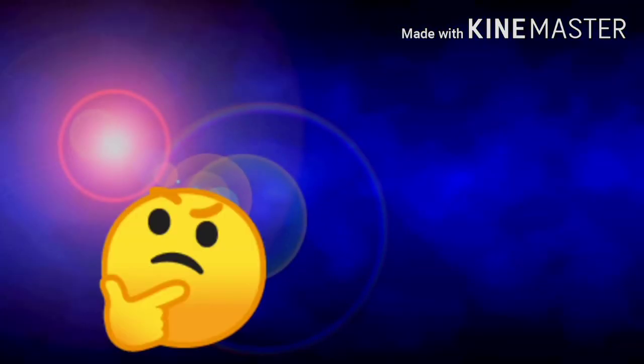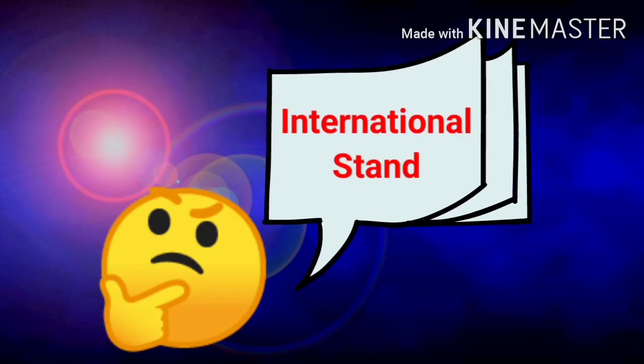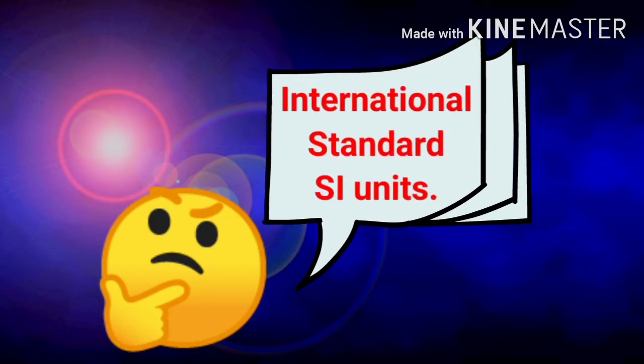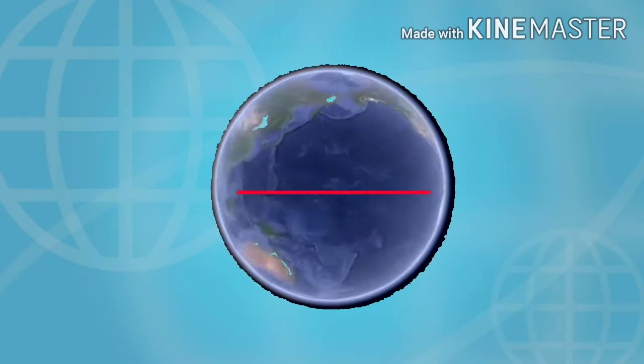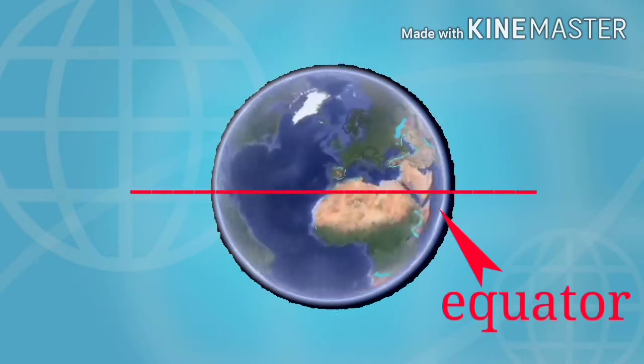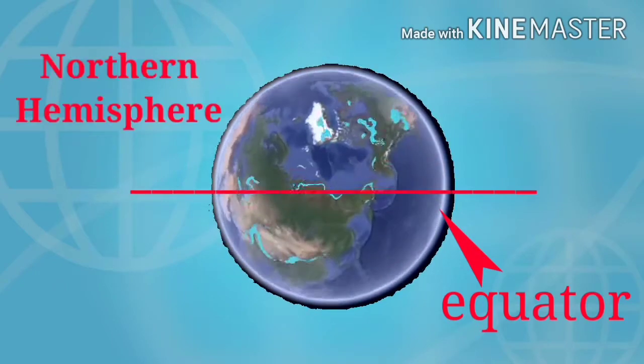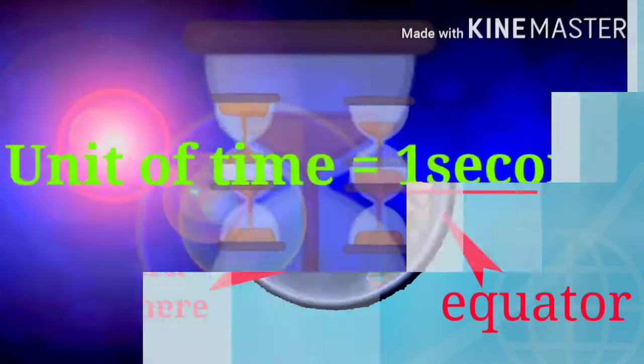So how and where does this value come from? In the SI method we will talk about the same in this video. Let me tell you one more thing. Time is measured on the equator, which is the equator dividing the Earth into two equal parts: Northern Hemisphere and Southern Hemisphere.